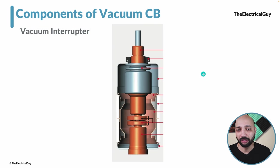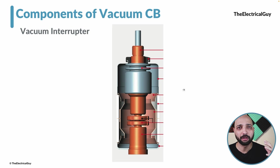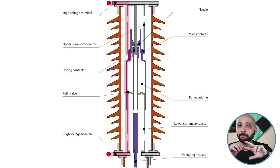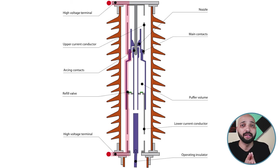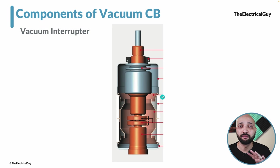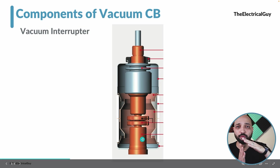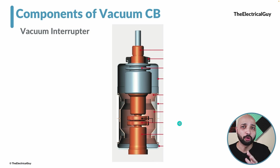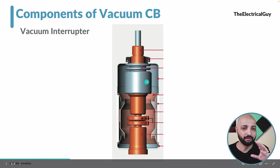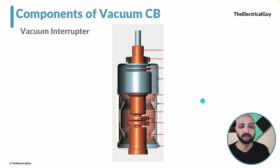The first portion is the vacuum interrupter. In a previous video we talked about high voltage SF6 circuit breakers where the interrupter had two different types of contacts: a main contact carrying normal system current and an arcing contact carrying abnormal fault current. But in the vacuum circuit breaker, we do not have dedicated contacts for that. There is only one fixed contact and one moving contact, and these contacts are responsible for carrying both normal and abnormal current. This is placed inside a vacuum bottle — there is nothing inside, only vacuum, and only the two contacts.